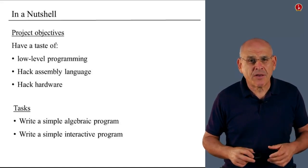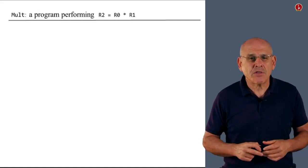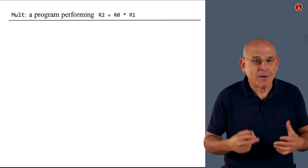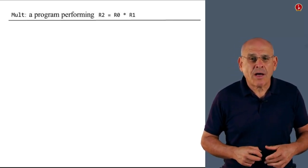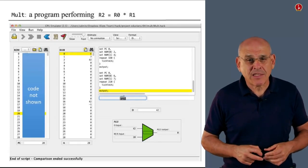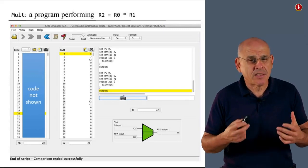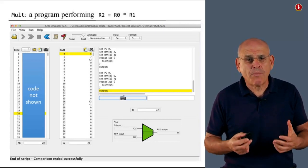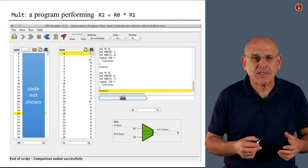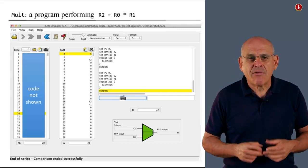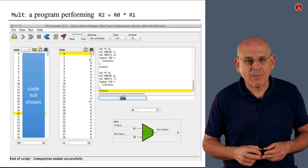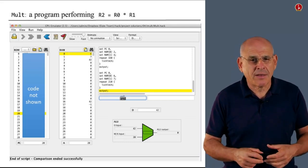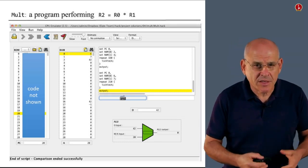So without further ado, here is the first program, which is called MULT. And the purpose of this program is to compute the product or the multiplication of R0 and R1. So here's a screenshot of this program executing in the CPU emulator. In fact, it's a screenshot of the end of this program's execution. If you look carefully at the top of the RAM, you will see that the RAM 0 is 6, RAM 1 is 7, and RAM 2 is 42. And that's exactly what this program is supposed to do, to multiply the first two registers in the memory and place the product of these two numbers in RAM 2.